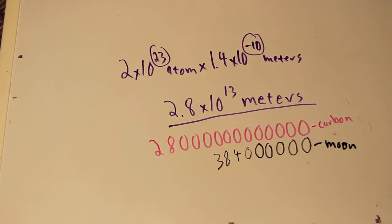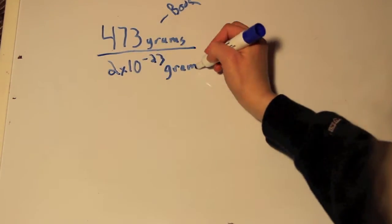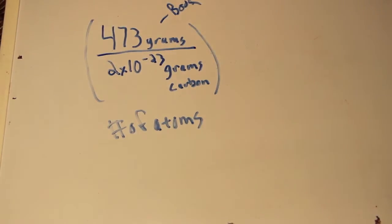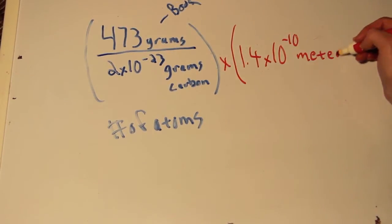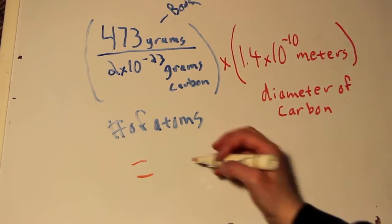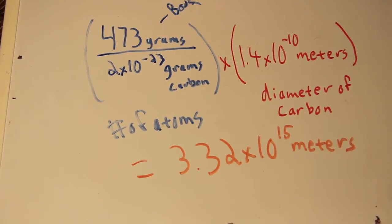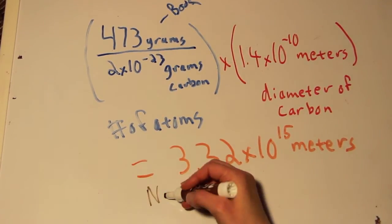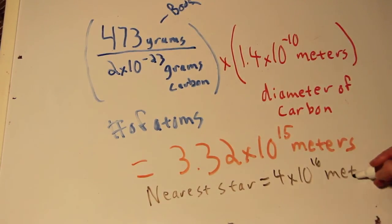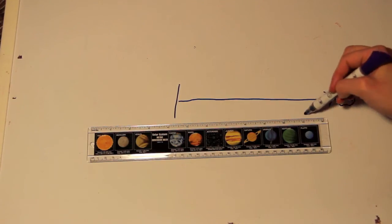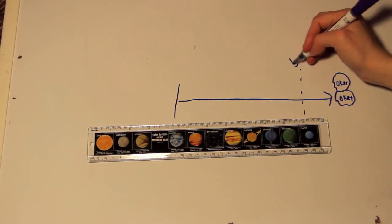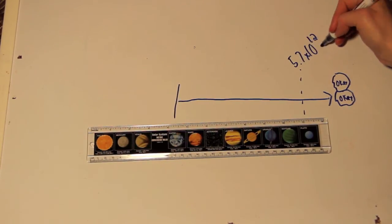So, could The Fault in Our Stars actually reach the stars? Just like before, we will divide the weight of the book by the weight of a carbon atom to get the number of atoms contained in the book. Then we will multiply this by the diameter of 1 atom to get 3 times 10 to the 15 meters. Hazel and Gus won't take us to the edge of our solar system, much less the nearest star, but they will get us out past Pluto.